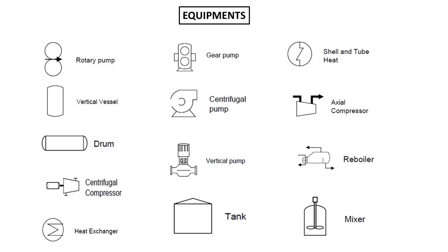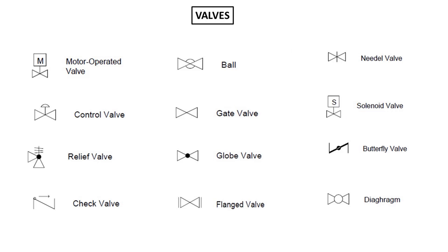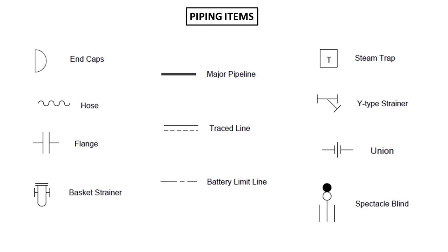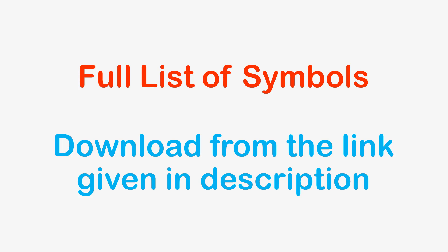Here I have displayed a few of the commonly used P&ID symbols like equipment, valves, piping, and instruments, but these are only a few. To get the full list of P&ID symbols, you can check the link given in the description of this video. We are not going to go through all the symbols one by one because most are self-explanatory. To download the full list, please refer to the link in the description.